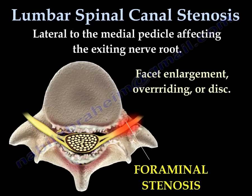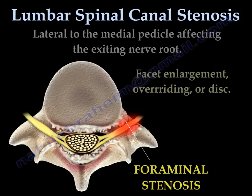Foraminal stenosis affects the exiting nerve root. For example, if it happens at L4-L5, it is going to affect the L4 nerve root. It occurs lateral to the medial pedicle, and there is typically significant facet enlargement and overriding — this is called foraminal stenosis.